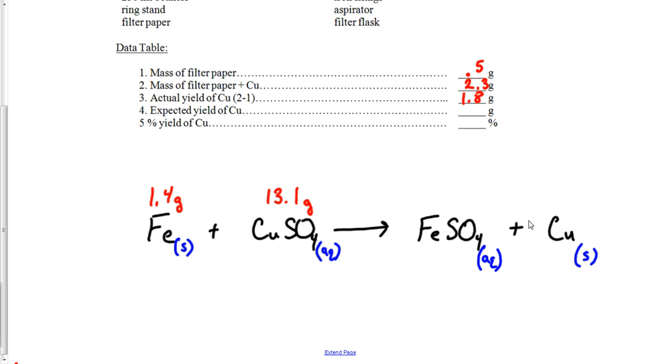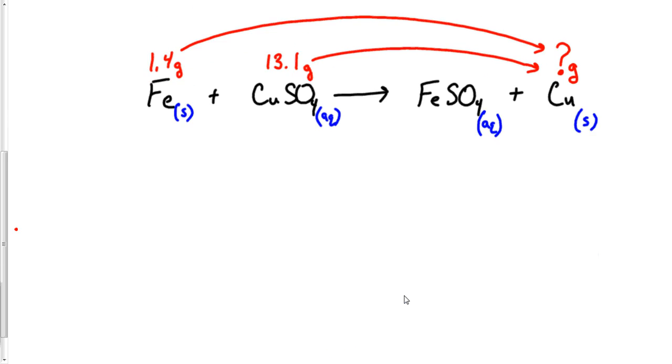So what we need to do now, and where this lab says expected, if you've watched any of my other videos, this is what I call the theoretical yield. So what we need to do now is this. We need to question mark grams. We need to figure out how much copper we should have made. Well, if you're watching this video, you're supposed to be able to do stoichiometry by this point, which means we need to do this. We need to figure out what we were supposed to make of copper. So let's see if we can't work that out and do a little stoichiometry.